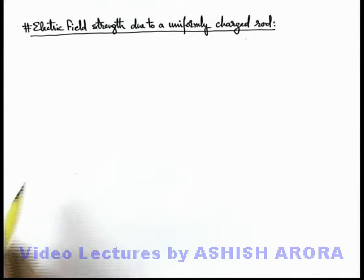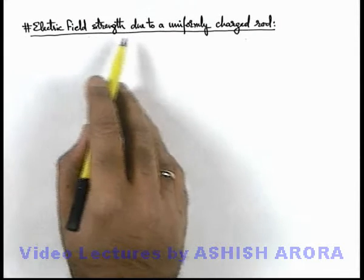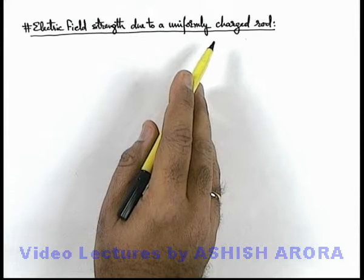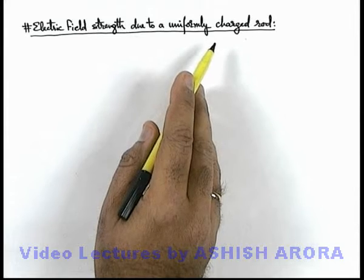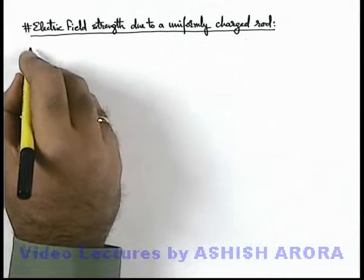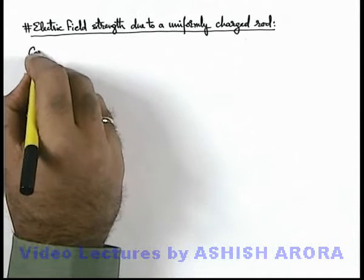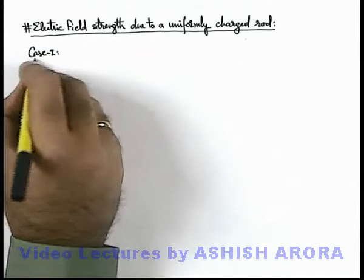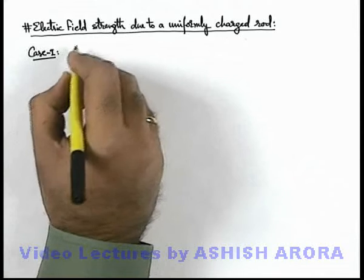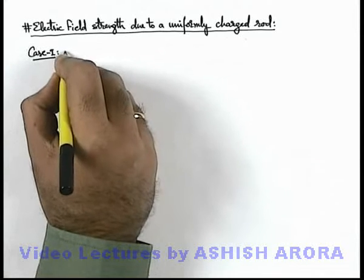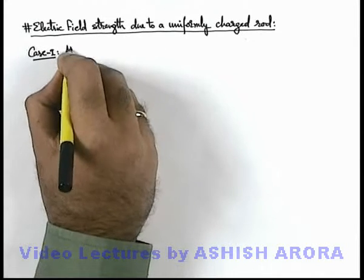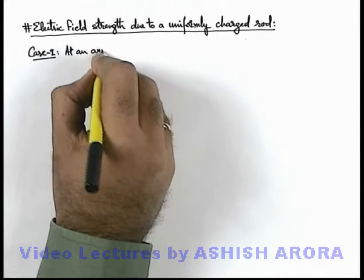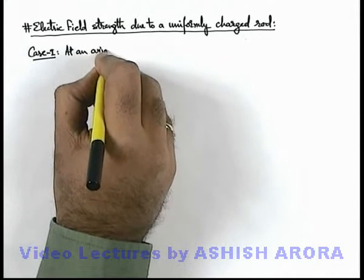Let's discuss the electric field strength due to a uniformly charged rod. There are two cases we'll discuss: as Case 1, we'll discuss the electric field strength at an axial point of the rod.